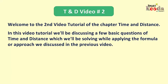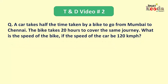Let's take the first question. The language of which goes like: a car takes half the time taken by a bike to go from Mumbai to Chennai. The bike takes 20 hours to cover the same journey. What is the speed of the bike if the speed of the car be 120 km per hour?